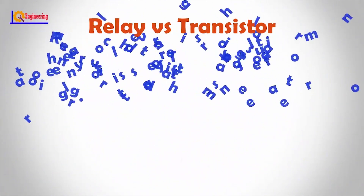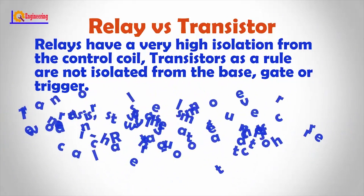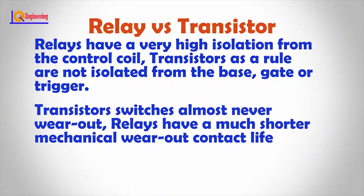Relays have very high isolation from the control coil. Transistors, as a rule, are not isolated from the base, gate, or trigger. Transistor switching almost never wears out, whereas relays have a much shorter mechanical wear-out contact life.